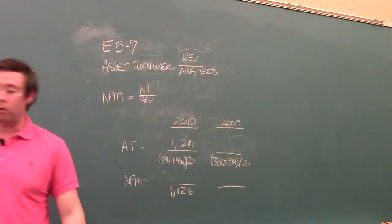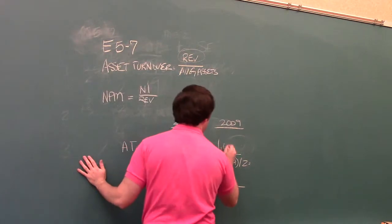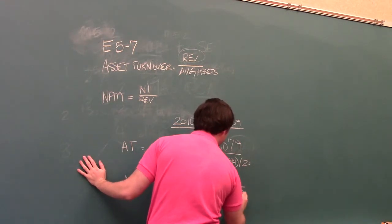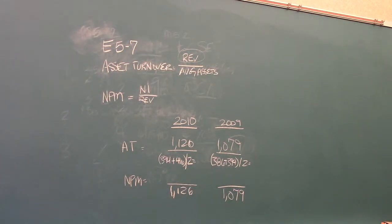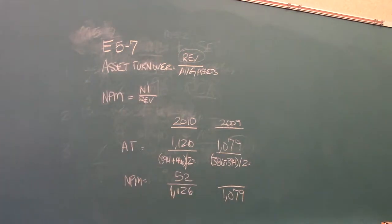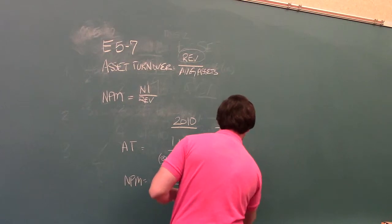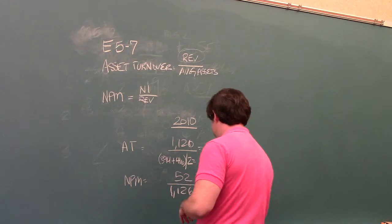Let's get total revenue for 2009. It's 1079, and we'll drop that down here as well so that we don't have to write it again. The only thing we're missing is for net profit margin. For net income, net income for 2010 was 52. And for 2009, it was 57. So, if we go ahead and calculate all these out.